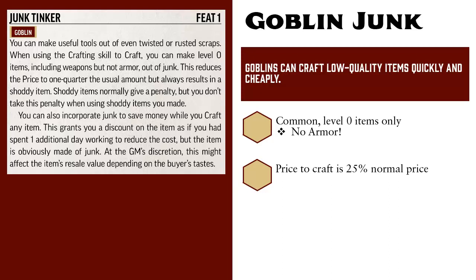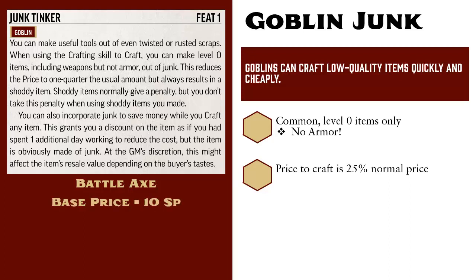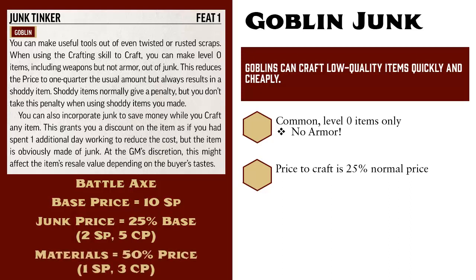For example, let's say such a goblin wanted to craft a battle axe. Battle axes normally cost one gold piece, which is the same as ten silver pieces. But in this case, we would treat it as having one quarter of that price, or two silver pieces and five copper, so the goblin crafter in this example would need to provide half of that up front, which would be one silver and three copper pieces, and after four days of work, would have a remaining balance of one silver, three copper.